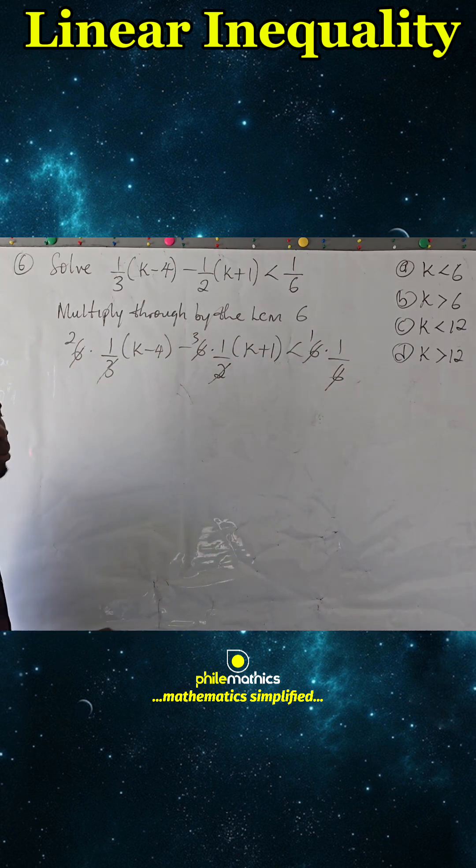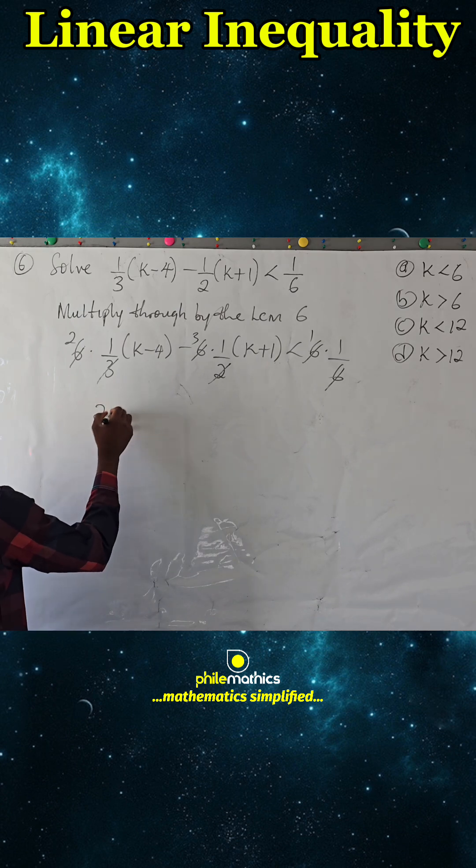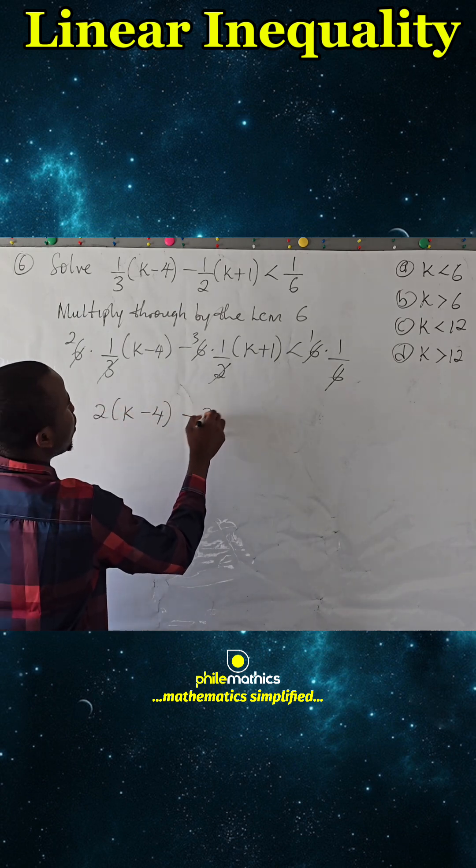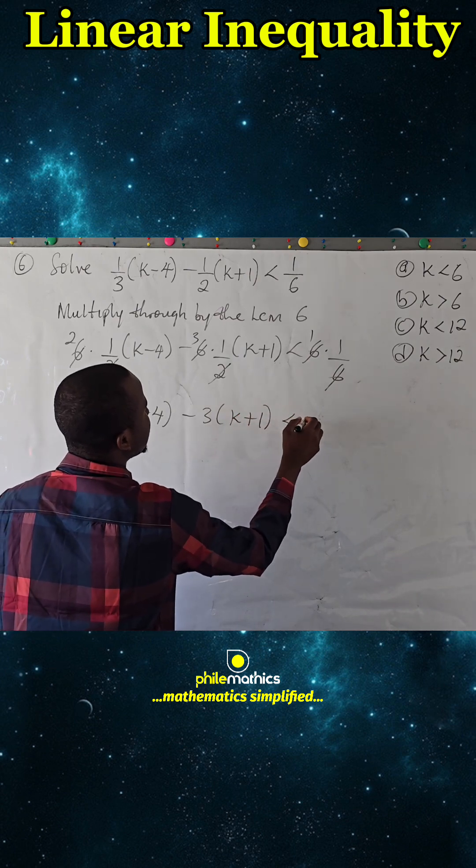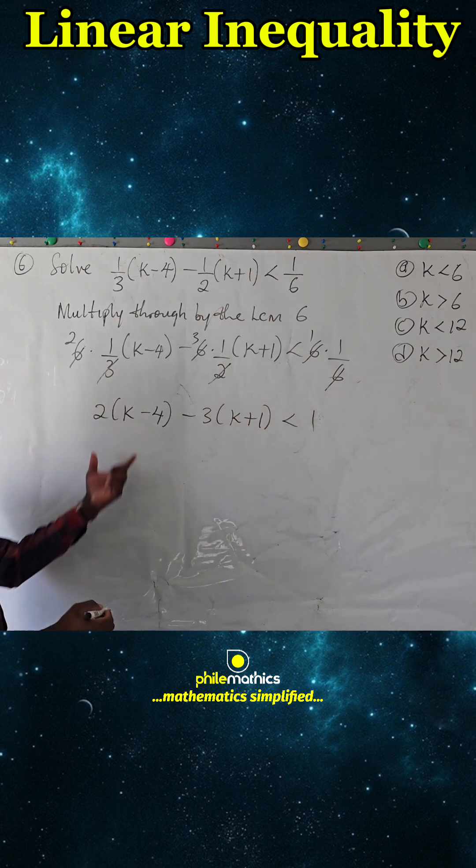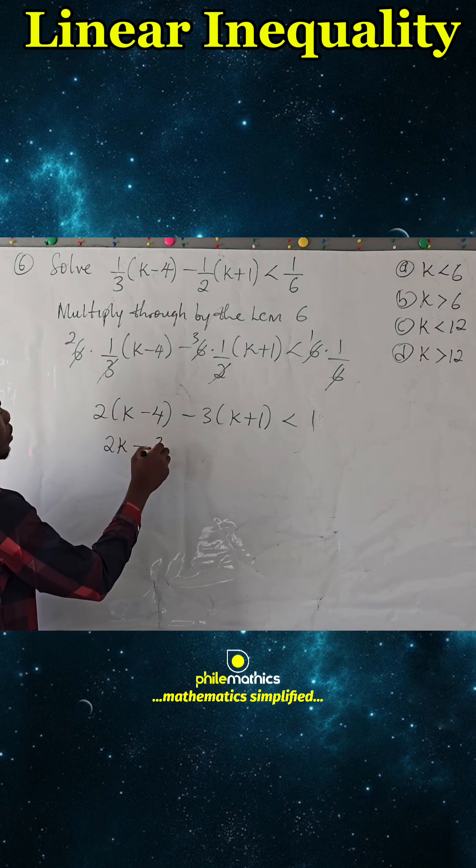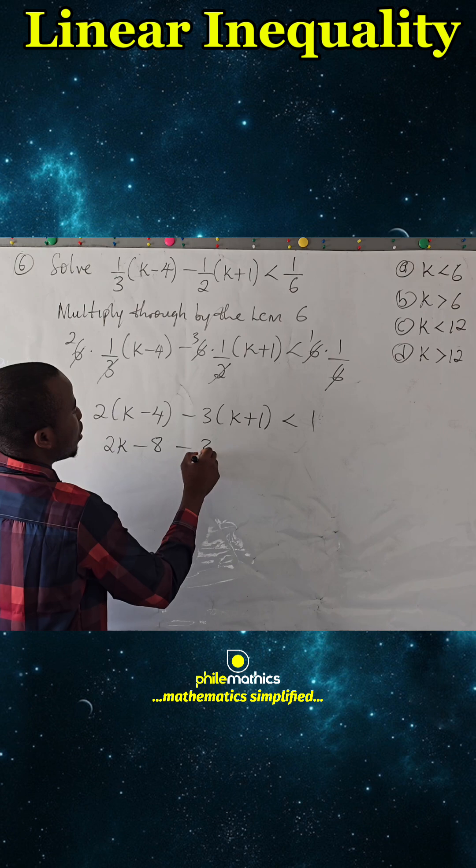To open the bracket: two times k is 2k, two times minus four is minus 8, minus 3k minus 3, less than 1.